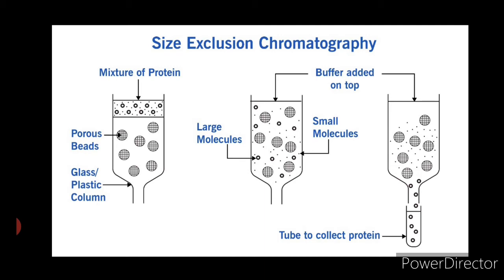In contrast, the larger molecules have only the liquid surrounding the beads accessible to them, and thus move through the column faster, eluting first. The smaller molecules move more slowly through the column and elute later.